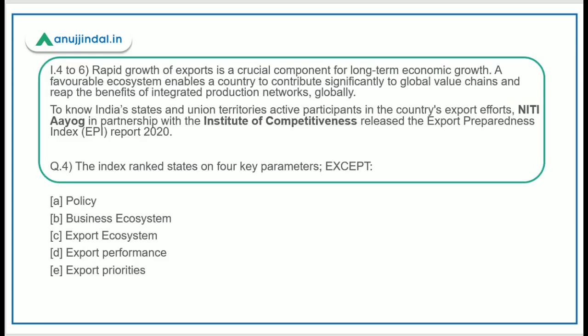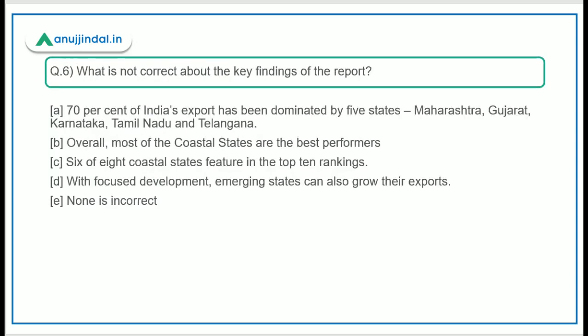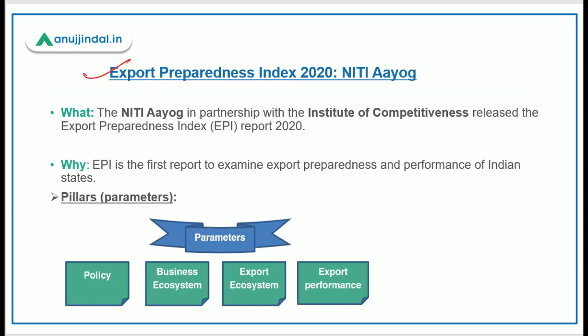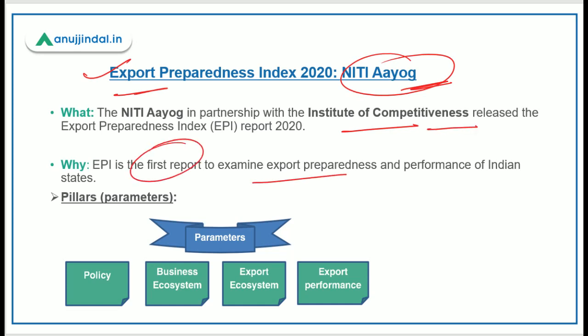Questions number 4 to 6 are based on the Export Preparedness Index. This index has been launched by NITI Aayog in partnership with the Institute of Competitiveness. This is the first report to examine export preparedness and performance of Indian states. This index is based on four parameters.